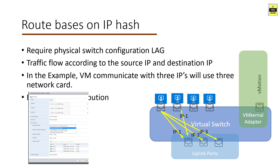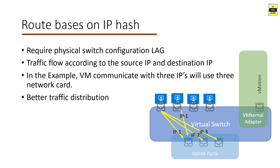The next option is route based on IP hash, which requires physical switch configuration. In this method, traffic flows according to source and destination IP. For example, if a virtual machine is communicating with three different IPs, it can use all available VMNICs in the vSwitch. If a VM is only communicating with one destination, only one NIC is used. This method provides better traffic distribution, but has higher CPU overhead and requires IEEE 802.3ad link aggregation support on the physical switch.